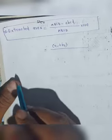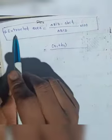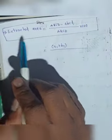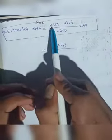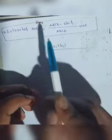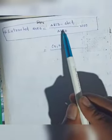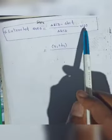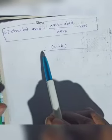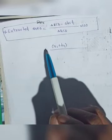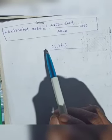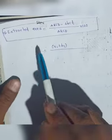From this, the extracted area equals area of capital ABCD minus area of small ABCD, divided by area of capital ABCD, into 100. This gives the amount of coal extracted.